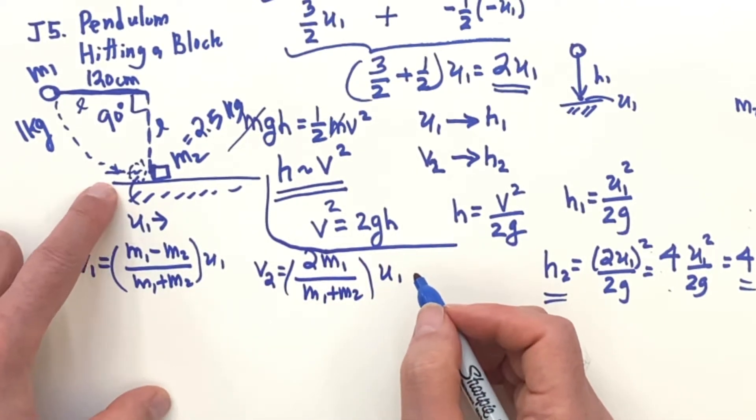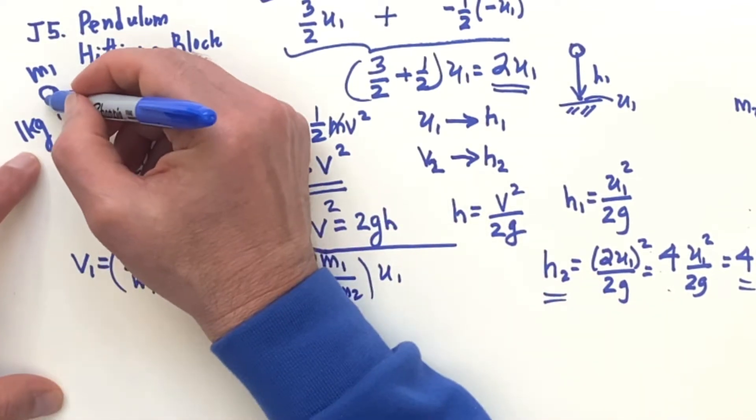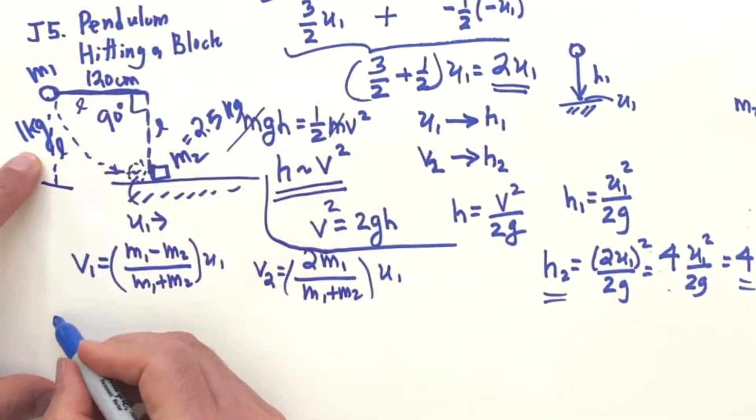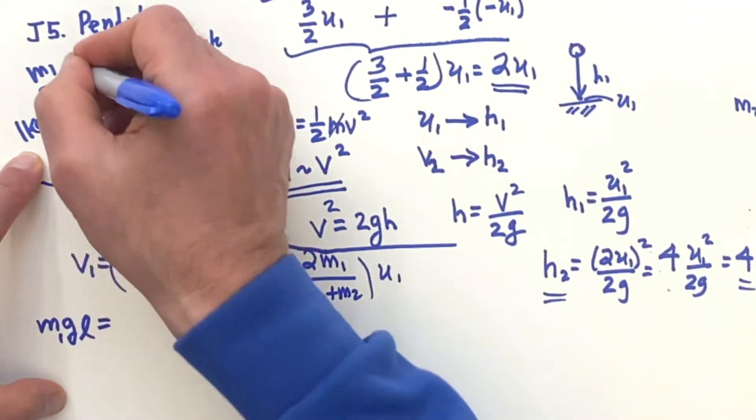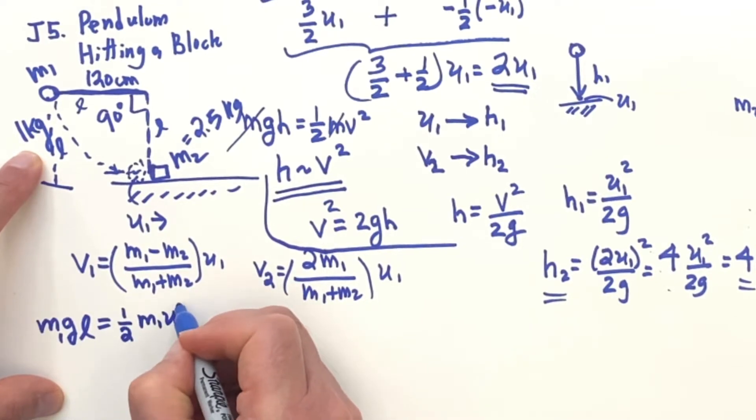So the first part of the problem is to find U1. But we can find U1 by conservation of energy. We're at here a height, H, which is equal to L. So we have potential energy, M1 GL. And when we get down here, we're going to have kinetic energy, one half M1 U1 squared.